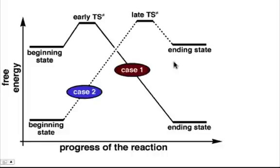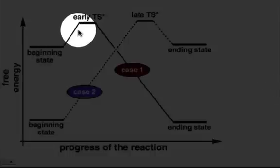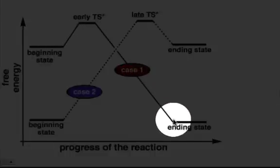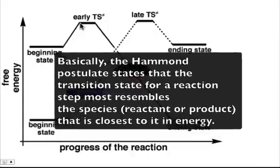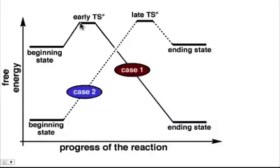Whether a transition state is early or late depends on whether we're going downhill or uphill in energy. This is known as the Hammond postulate. In the first case, our beginning state is higher in energy than our ending state. We go up in energy to our transition state, then go downhill to a state lower in energy than where we began. Based on the Hammond postulate, the transition state looks most like the beginning state — not the end state. We call this an early transition state because bond making and bond breaking is early in the reaction step.